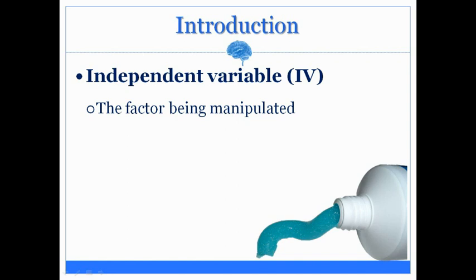An independent variable is the factor that's being manipulated by the experimenter. What that means is that it is the item that is being changed, altered, or adjusted by the experimenter.